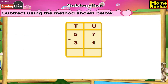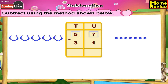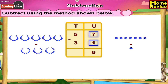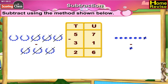57 minus 31. If you arrange them under tens and units, it is 5 tens 7 units minus 3 tens 1 unit. 7 minus 1 is 6. 5 minus 3 is 2. So 57 minus 31 is 26. That is 2 tens 6 units.